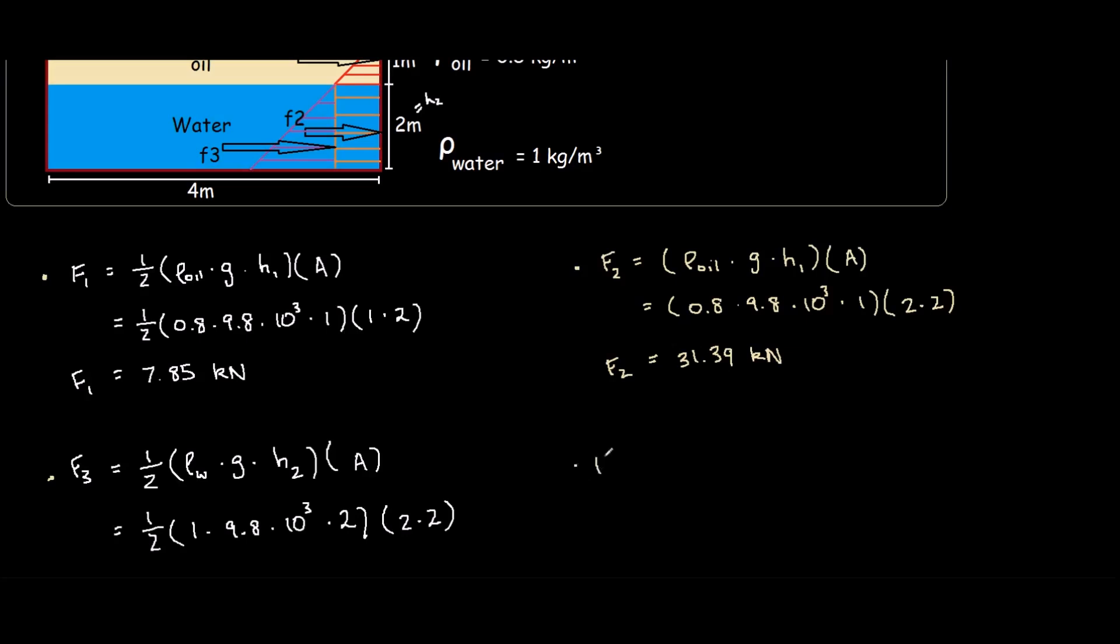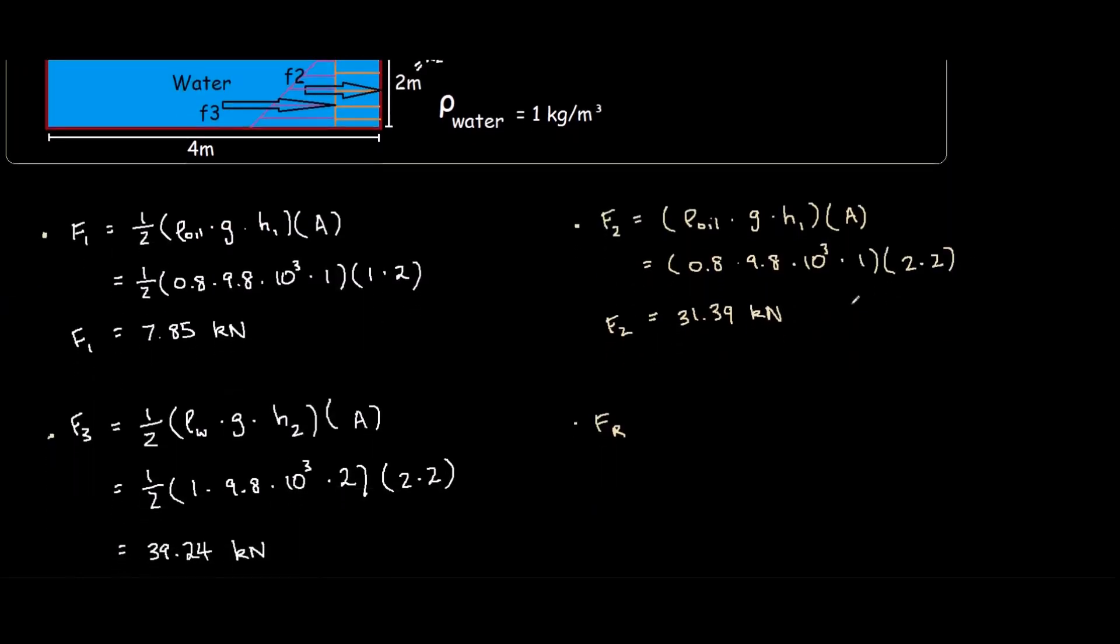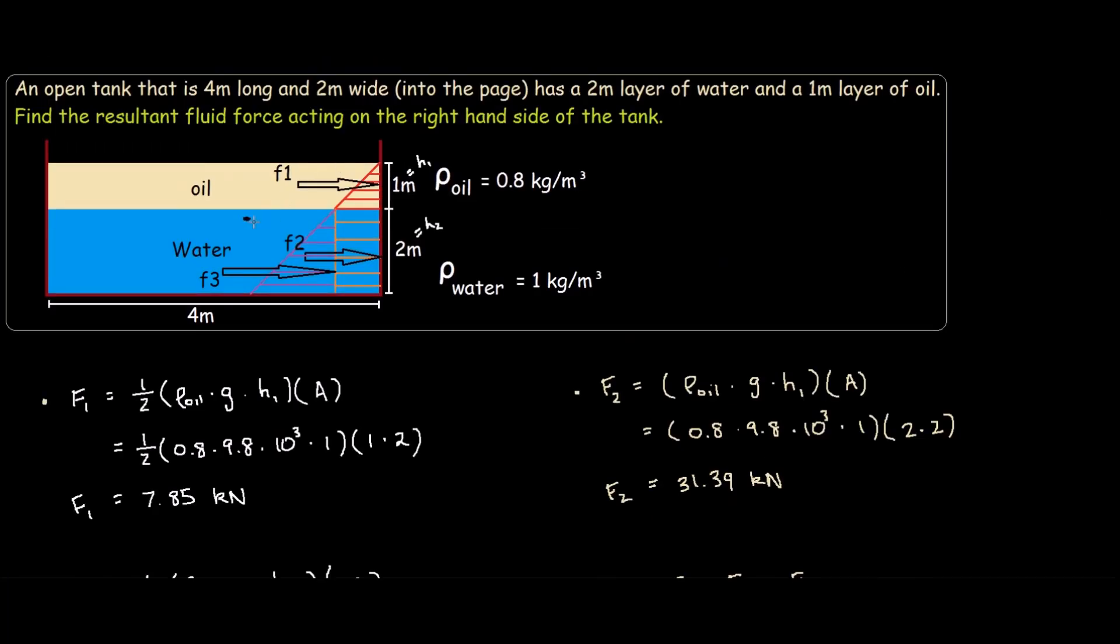So to find the resultant force, which is part of the question, to find the resultant fluid force, you would simply add up F1, F2, F3. So resultant force equals to F1 plus F2 plus F3, which would be 7.85 plus F2 31.39 plus F3 which is 39.24. So this comes out to be 78.24 kilonewtons. So this is FR, the combination of all three forces. But we don't know where it is located.